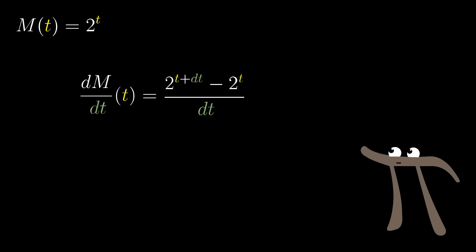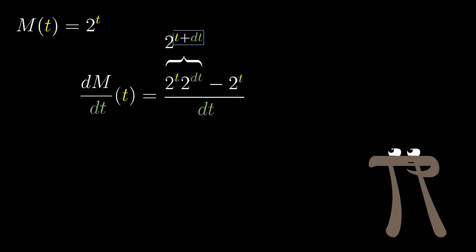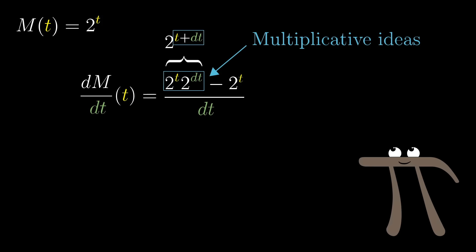So start by just taking a very close look at this term, 2 to the t plus dt. A core property of exponentials is that you can break this up as 2 to the t times 2 to the dt. That really is the most important property of exponents. If you add two values in that exponent, you can break up the output as a product of some kind. This is what lets you relate additive ideas, things like tiny steps in time, to multiplicative ideas, things like rates and ratios. I mean, just look at what happens here. After that move, we can factor out the term 2 to the t, which is now just multiplied by 2 to the dt minus 1, all divided by dt.